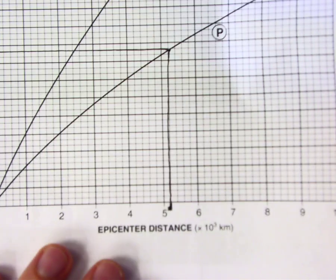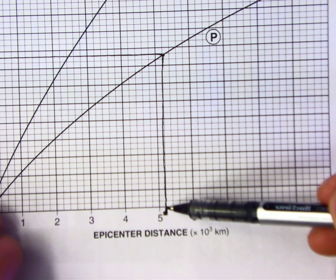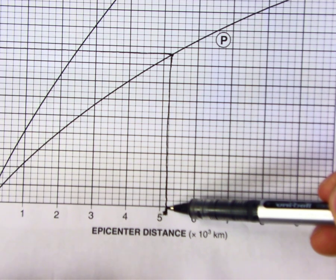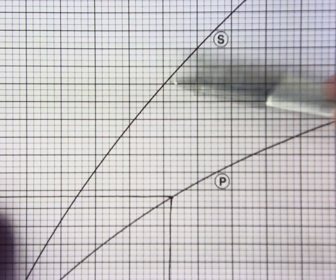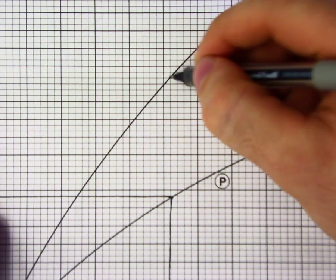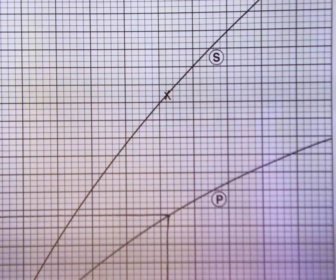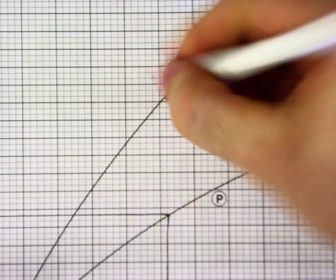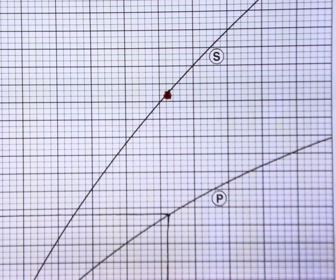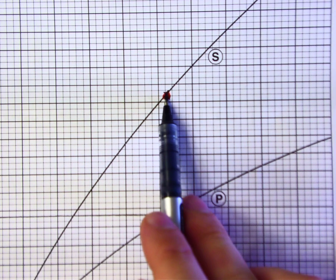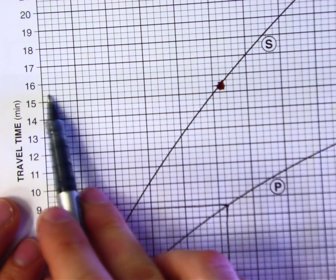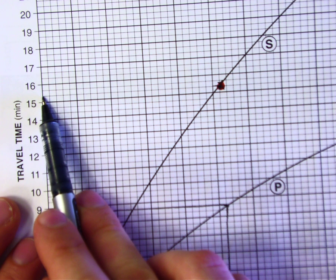For S wave travel time, it's the exact same process. Find 5,200 kilometers, trace up to the S wave line, and trace across to the travel time axis. It crosses at 15 minutes and 20 seconds. So your S wave travel time is 15 minutes and 20 seconds.